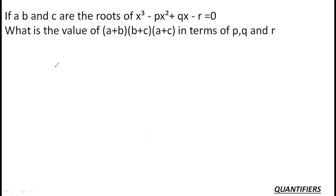So, a, b, c are the roots of the equation. This x cube minus px square plus qx minus r equal to 0. This is the equation, right? We need to find the value of this a plus b, b plus c and a plus c in the terms of pqr.